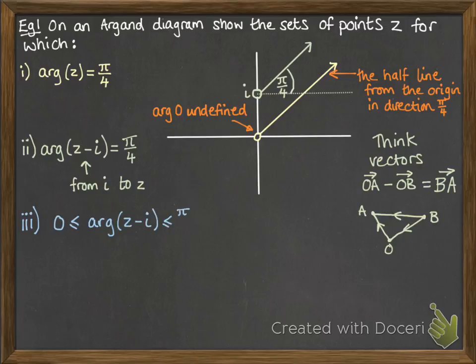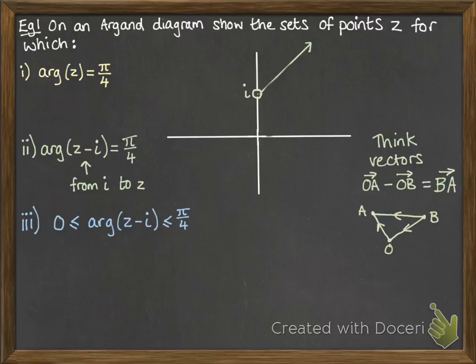Okay, and this time we've got a region to think about. So the argument of z minus i is between 0 and π/4. So we'll just get rid of some of those. So we've got that line that we had from part 2 in green. Now this time we want the angle to be anywhere between π/4 and 0. So this would be the region here, shaded in.